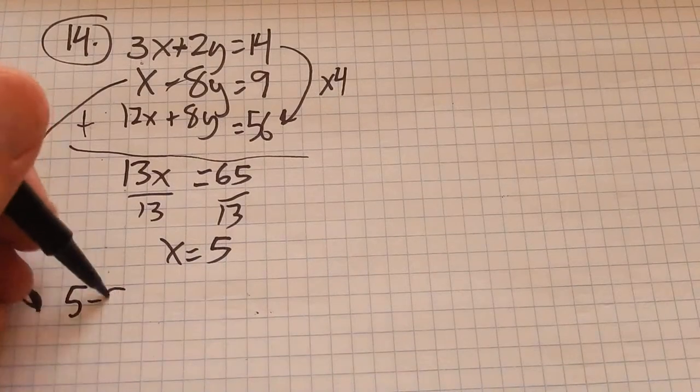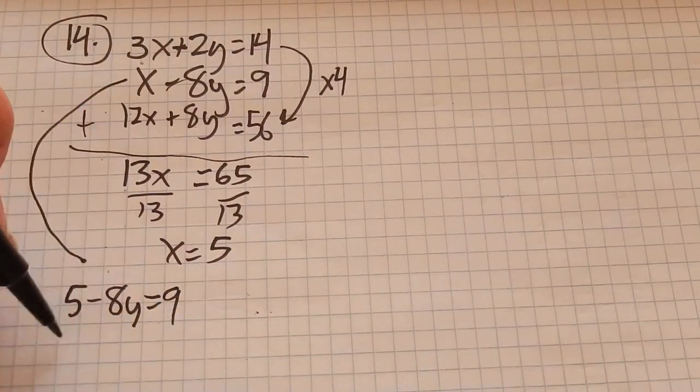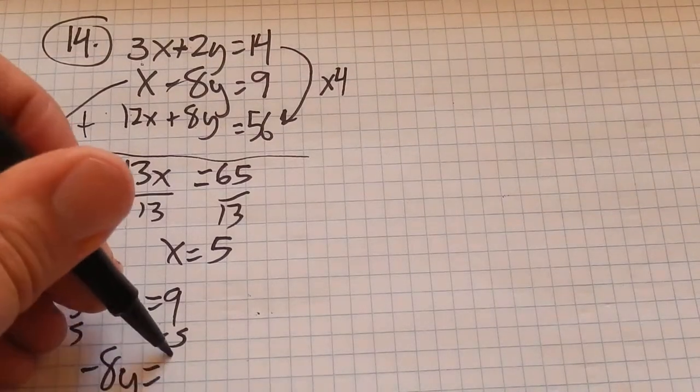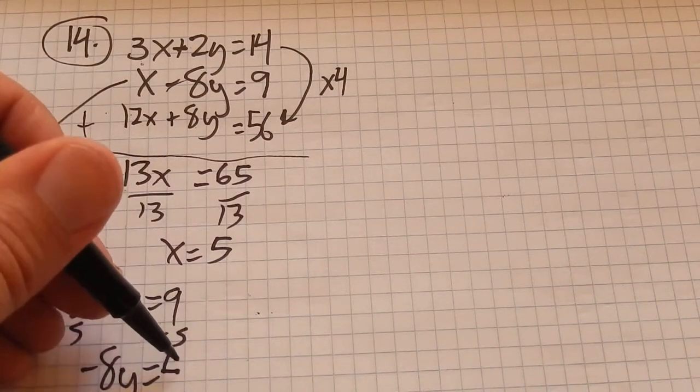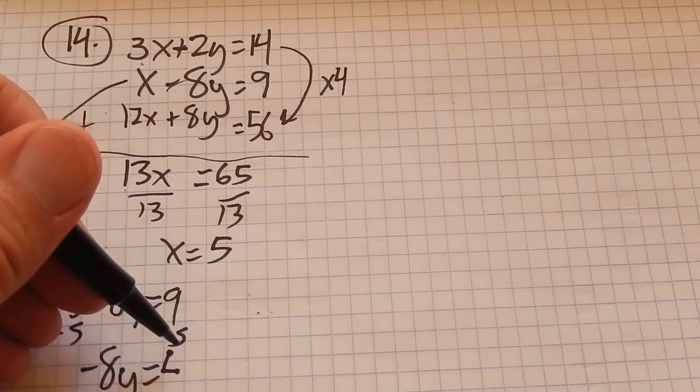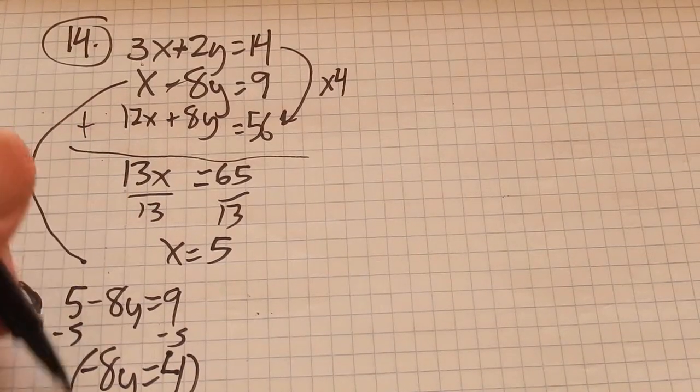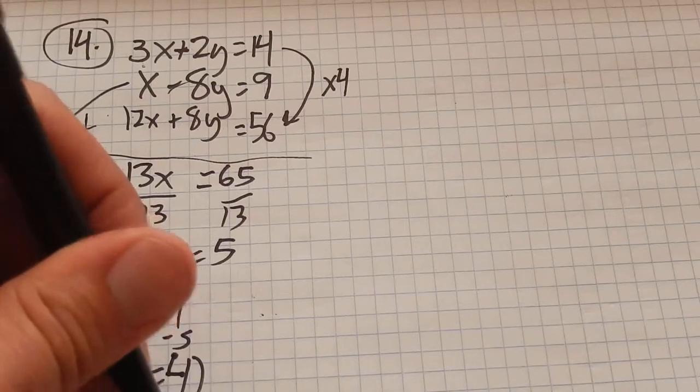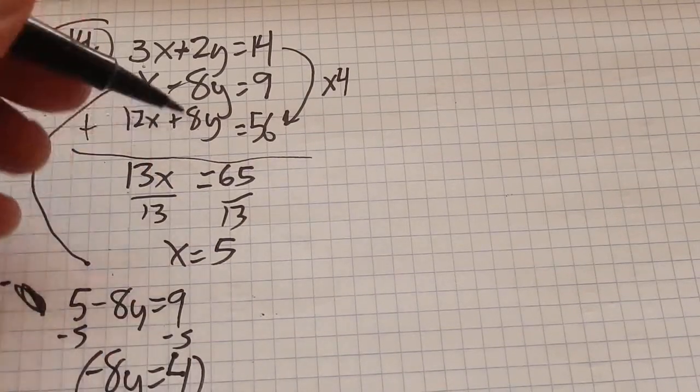5 minus 8y equals 9. Subtract 5 from both sides. Negative 8y equals 4. Divide both sides by negative 8. Y equals negative 1 half.